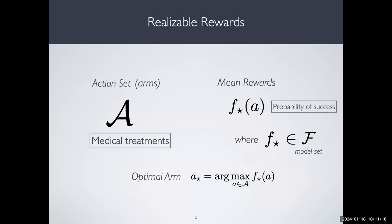What you want to find out is: by interacting with the world, pulling arms and collecting random rewards, eventually find the optimal arm — the treatment that maximizes the probability of success. Think of F as arbitrary for now. I'll give examples where it's not arbitrary, but the goal is to understand what happens if F is completely arbitrary. How many samples do I need to find a good arm?